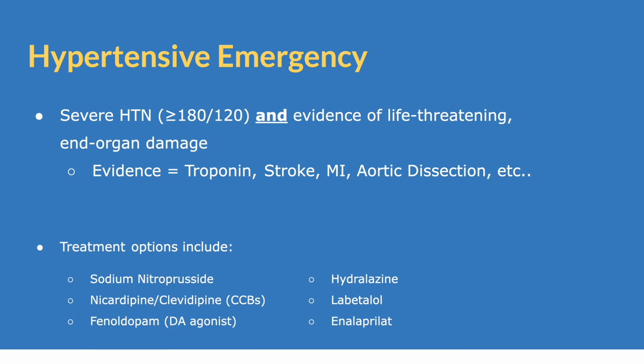There are several types of evidence that could point towards end organ damage, and this includes troponin elevation, a previous stroke, myocardial infarction, aortic dissection, and many more.